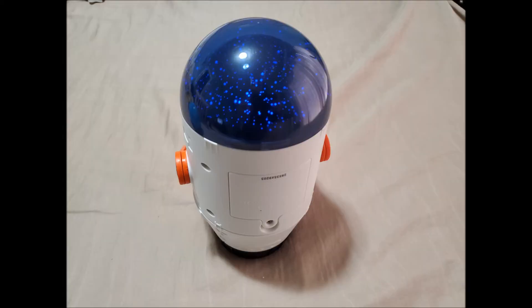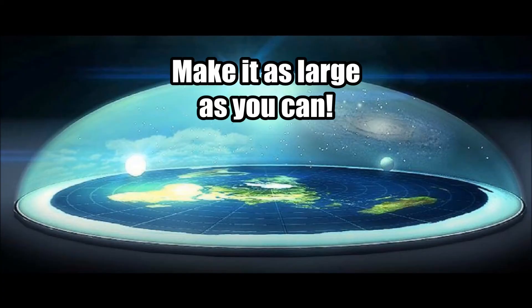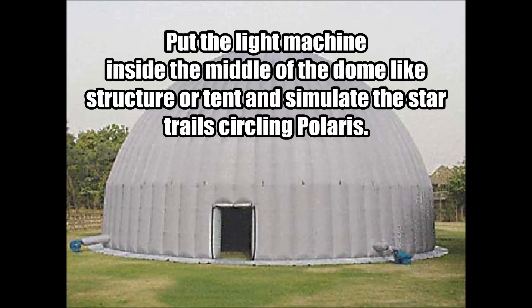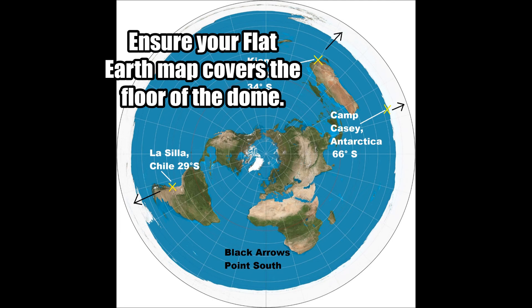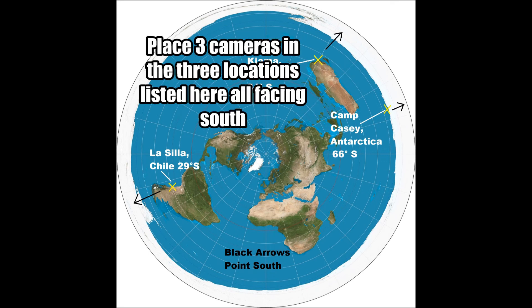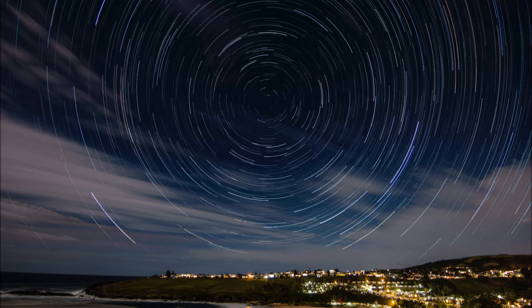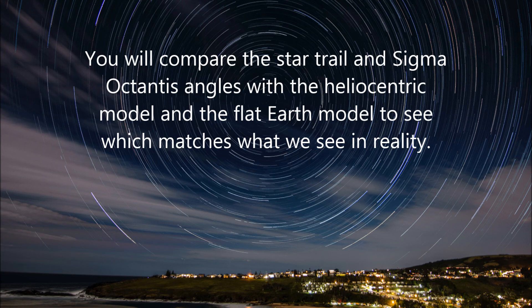For the southern star trail flat earth experiment, you will need a light machine with rotating stars rotating around Polaris. You also need a flat earth map to simulate the flat earth — try to make it as big as you can, preferably 20 or 30 feet wide to get the best effects. Put the light machine in the middle of a dome-like or tent-like structure and simulate the star trail circling Polaris. Ensure your flat earth map covers the entire floor of your dome. Place the light machine at the north pole and turn it on, then place three cameras in the three listed locations all facing south. Record your results and compare the star trail and Sigma Octantis angles with the heliocentric model and the flat earth model to see which one resembles reality.